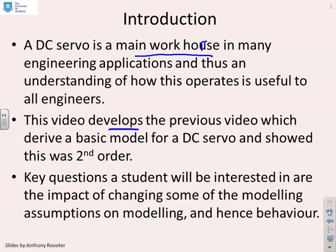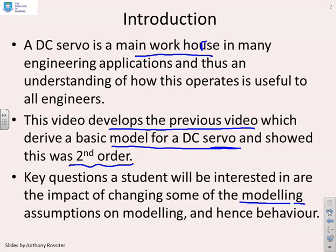What we're going to do here is develop the previous video which showed that the basic model for a DC servo comes out as a second order ODE. But we did make very particular assumptions, so we're going to look at what happens if we change some of those modelling assumptions. Does it change the model we end up with and therefore the behaviour of the DC servo?